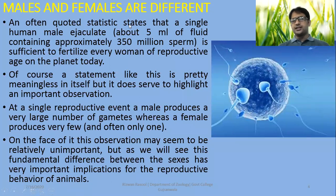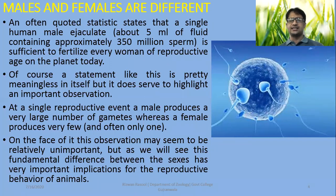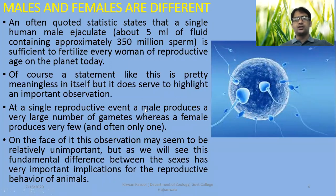Males and females are definitely different — it is a common statement. A commonly cited statistic states that a single human male can produce about 5 ml of semen containing 350 million sperms, sufficient to fertilize every woman of reproductive age on the planet. Of course, this statement is an exaggeration, but the important point is that sufficient gametes are produced by a single human ejaculation to fertilize a large number of eggs. This fundamental difference between the sexes has very important implications for reproductive behaviour as well as sexual selection in all animals.